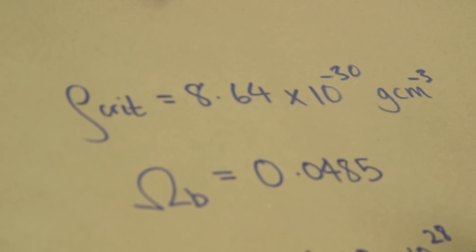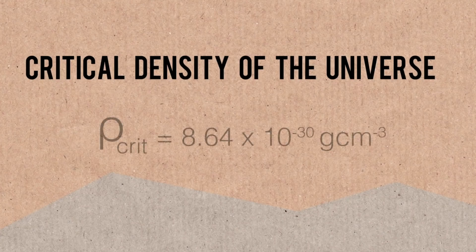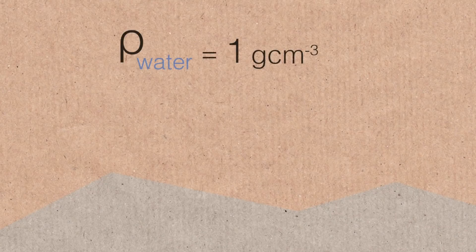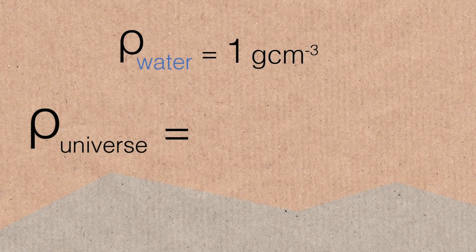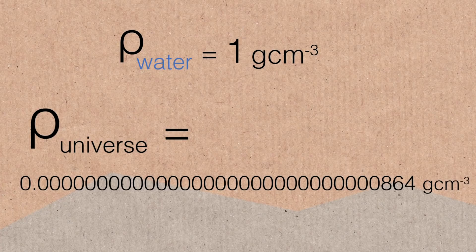The first piece of information is the critical density of the universe — a good measure of the energy density of the universe overall. We know the universe is very close to being spatially flat, not shaped like a sphere or a saddle but somewhere in between. Because of that, its density is very close to the critical density, which is actually a really, really light density. Compared to water at one gram per centimeter cubed, this is a million million million million million times less than that. It's super undense — but of course, this is the universe we're talking about.